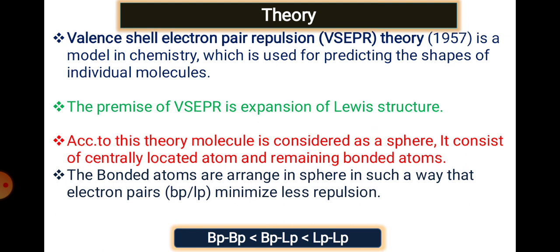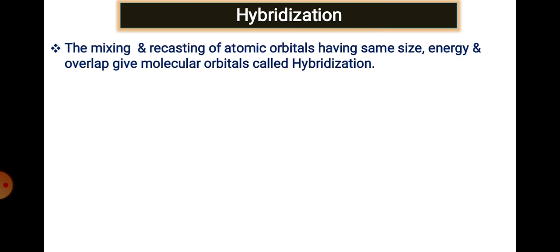As a conclusion from VSEPR theory, the repulsion order is: bond pair–bond pair repulsion is least (most stable), then lone pair–bond pair repulsion, and lone pair–lone pair repulsion is greatest. Whenever lone pairs are present in a molecule, the molecule gets distorted — there is no regular shape.